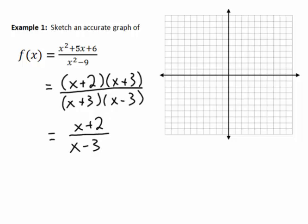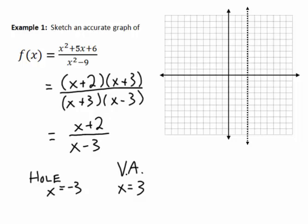From the factored form, we can determine properties of this graph. We have a hole at the term that cancels out — at x = -3. We also have a vertical asymptote at x = 3, the term that doesn't cancel out. We place that vertical asymptote on the graph as a dotted line at x = 3.